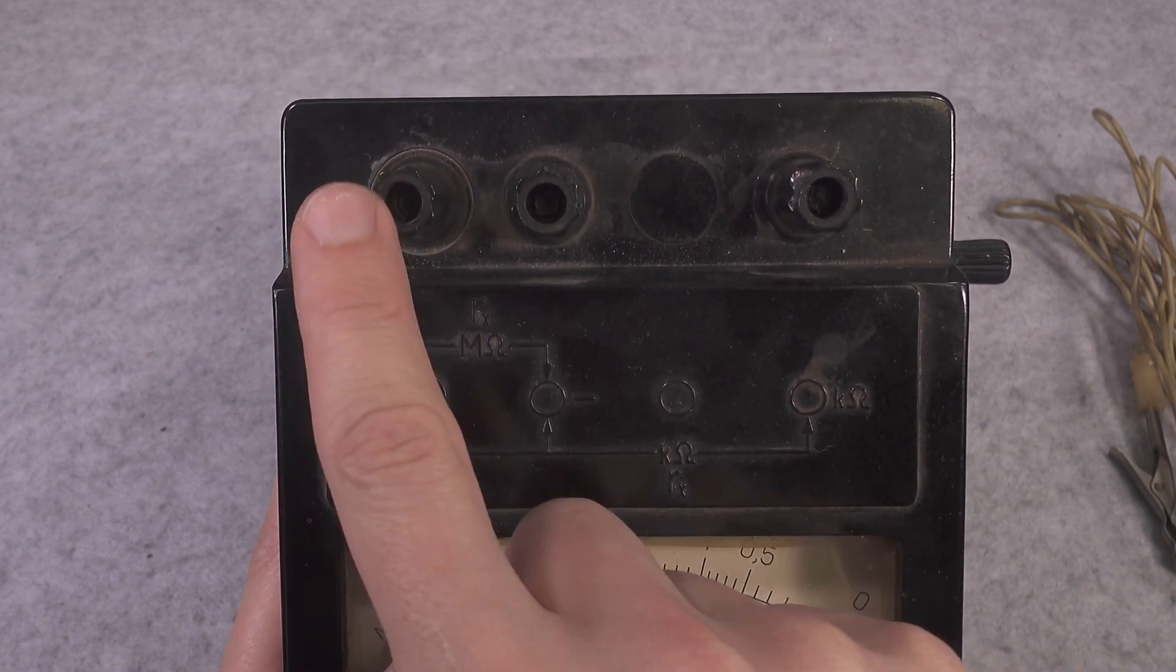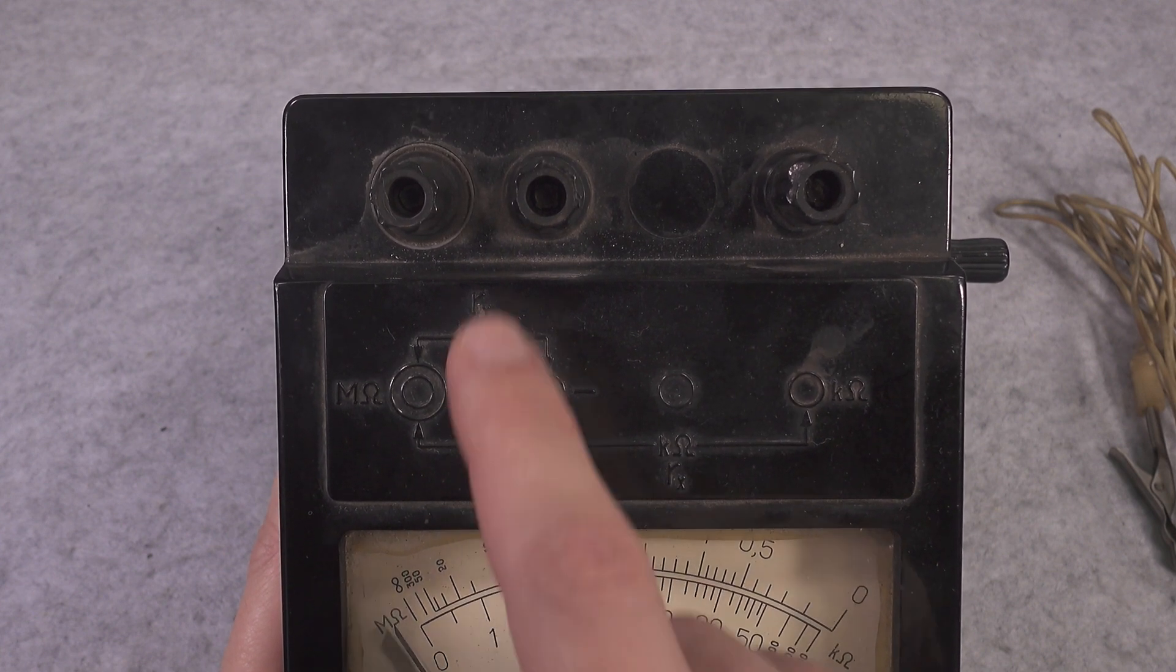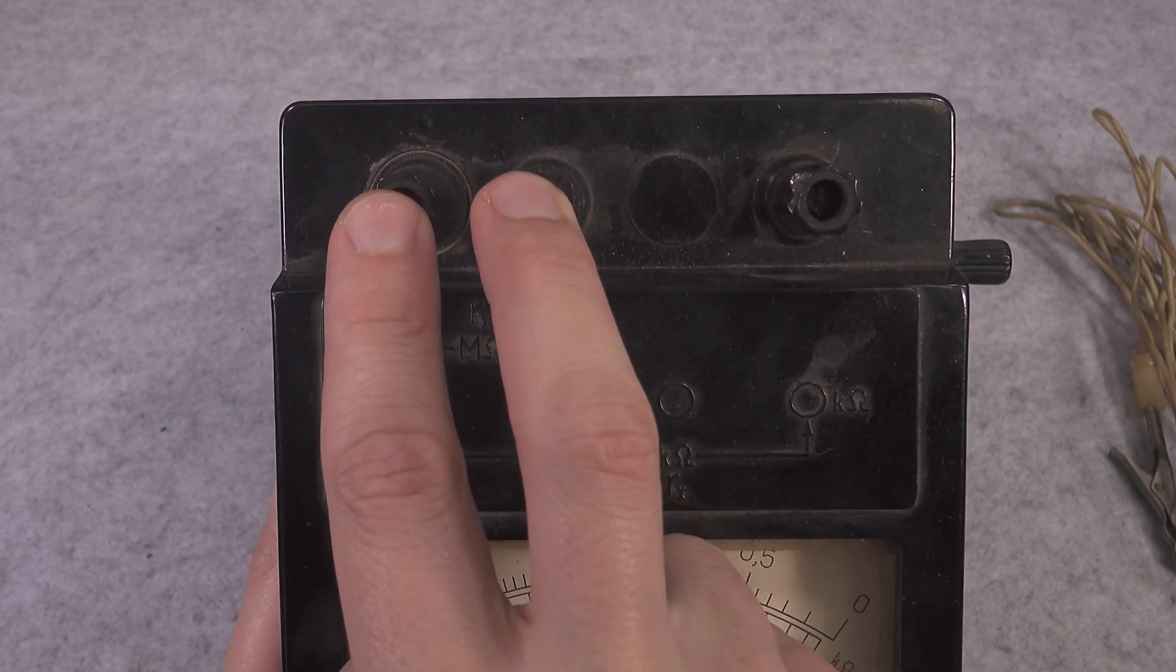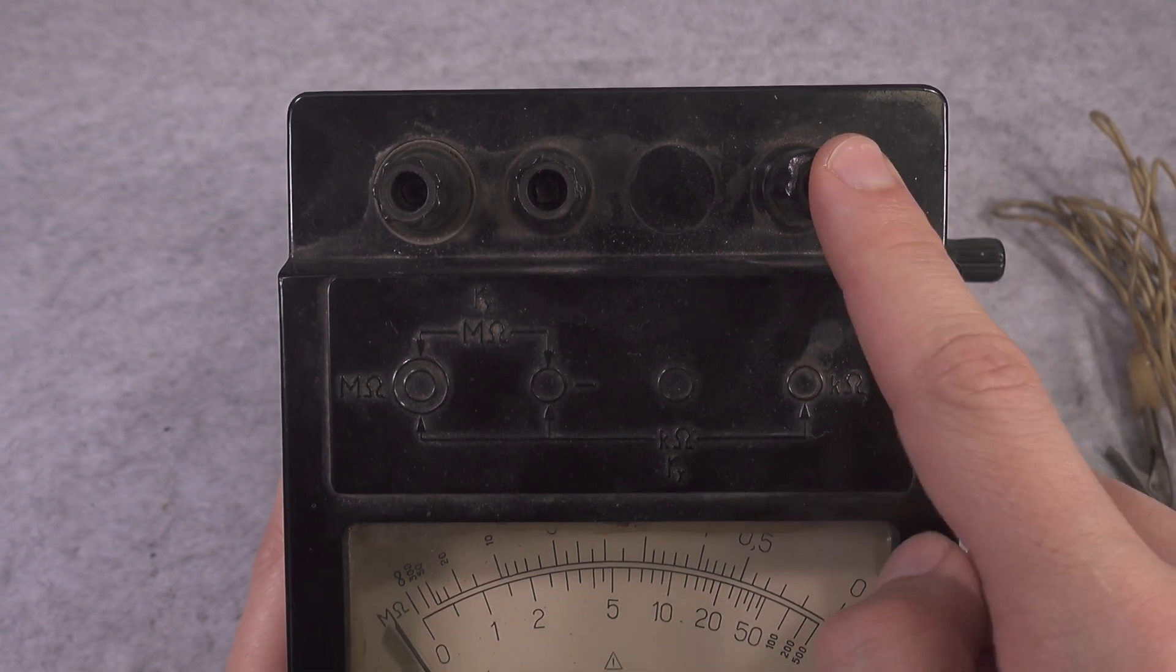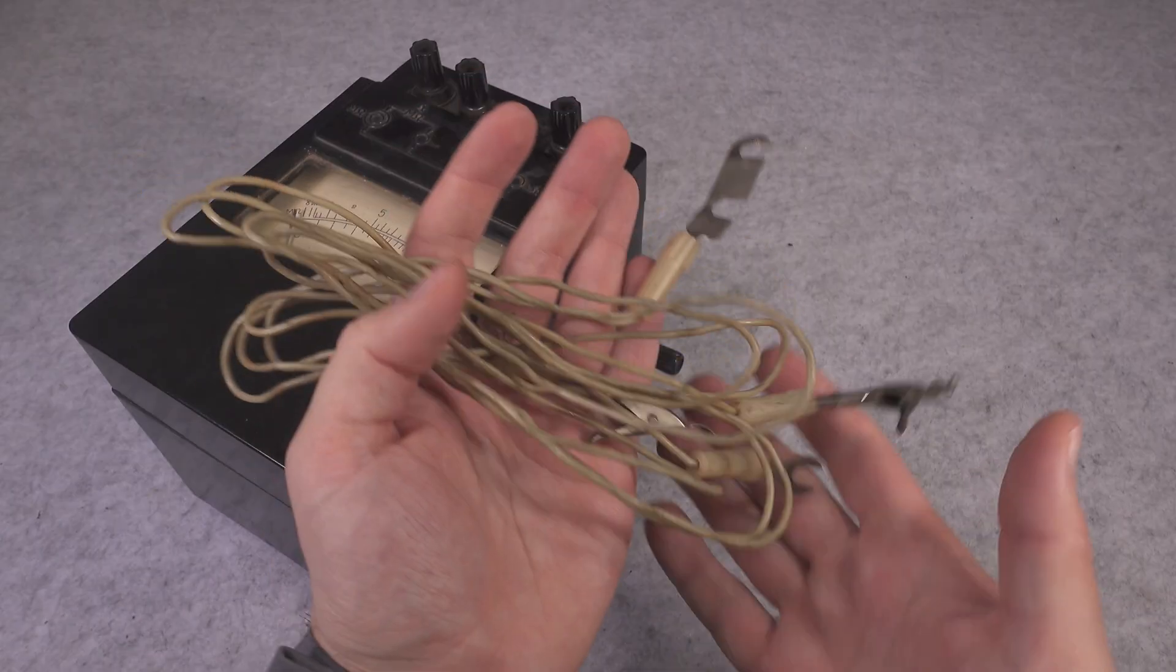You need to apply your load into two combinations of those terminals. If we would like to measure mega ohms, then we are going to attach our resistance between those two blocks. But if we would like to measure kilo ohms, then we need to bridge those banana sockets together.